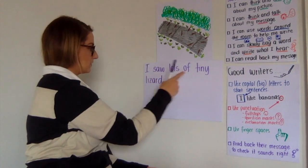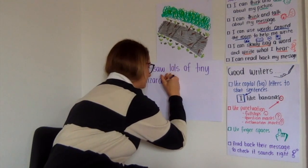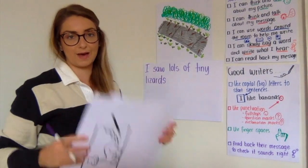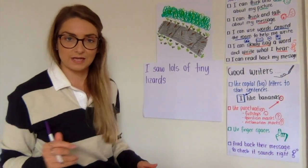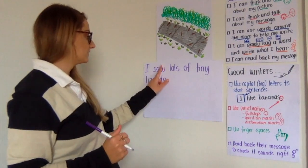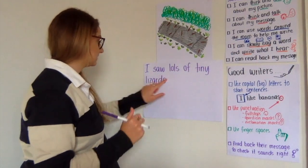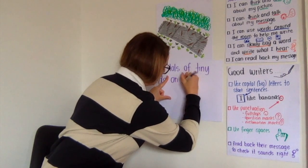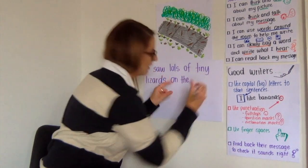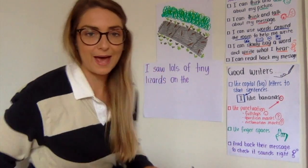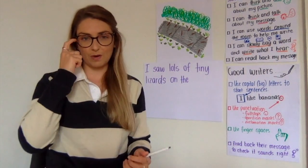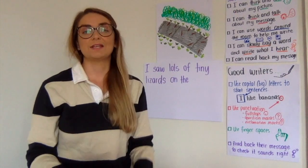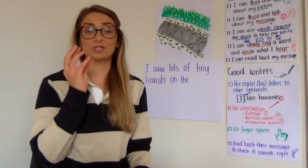All right. I saw lots of tiny lizards. Now I'm going to say where I saw them — they're on the footpath, or on the concrete beside the hedge. So I'm going to say: I saw lots of tiny lizards on the... easy peasy... footpath. Now 'footpath' is two words put together to make one. Can you hear it? Footpath. So I'm going to start with the first part, which is 'foot'.